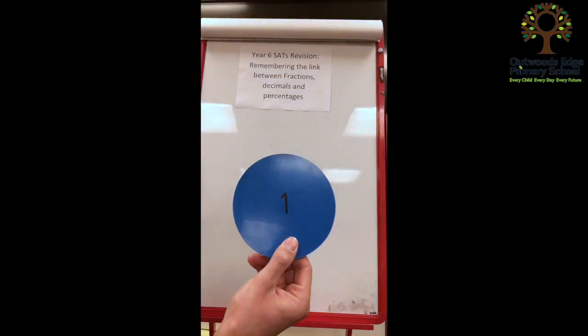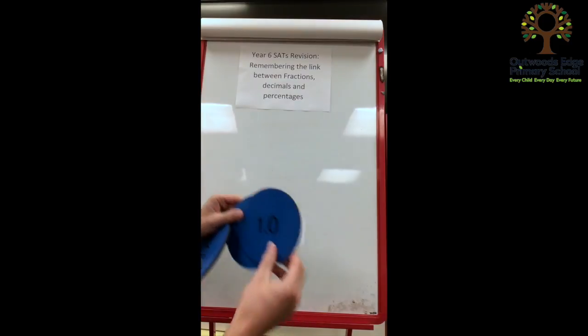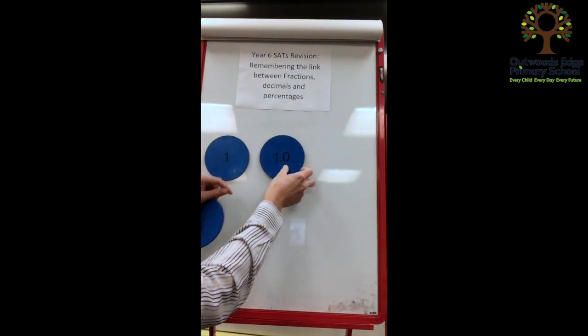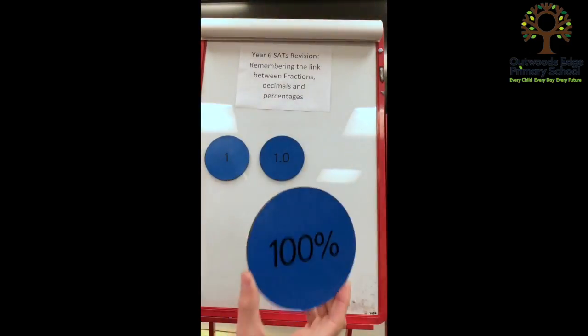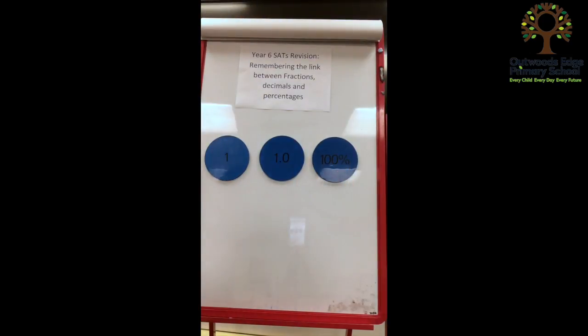So here we've got one whole and we can see that that is the same as 1.0 which is also equivalent to 100%. And the children can physically put these on top of the other to see that.